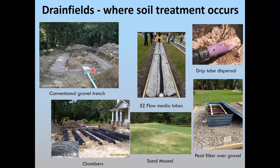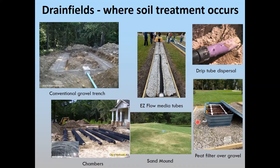There are many different types of drain fields. Here's the conventional gravel system. Here's another where chambers — basically a black plastic corrugated pipe roughly three feet in diameter cut in half — replace the gravel. Another system uses a black corrugated four-inch pipe surrounded by artificial media, taking the place of gravel and easier to install. We have a sand mound, which is an elevated treatment system, and a very shallow-placed drip dispersal system. There's also an innovative technology that uses peat moss to filter and treat the wastewater, sitting over a gravel bed over good soil.